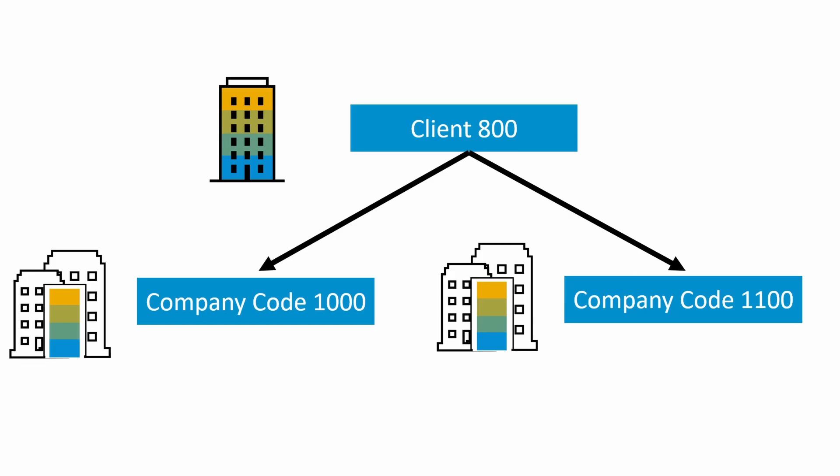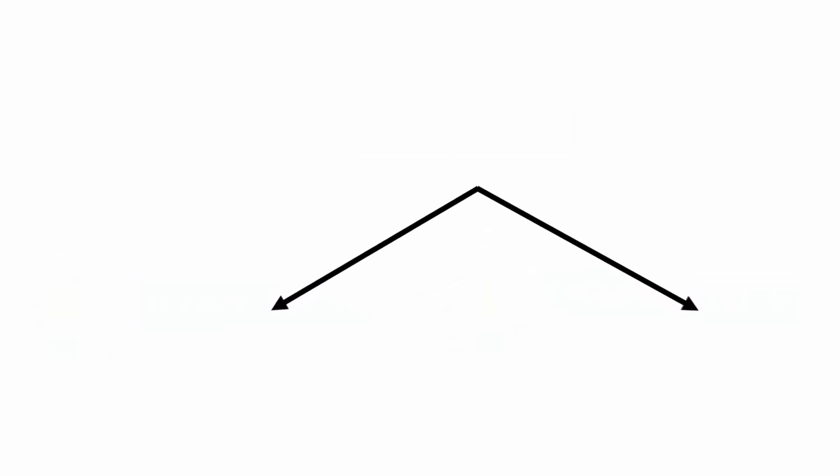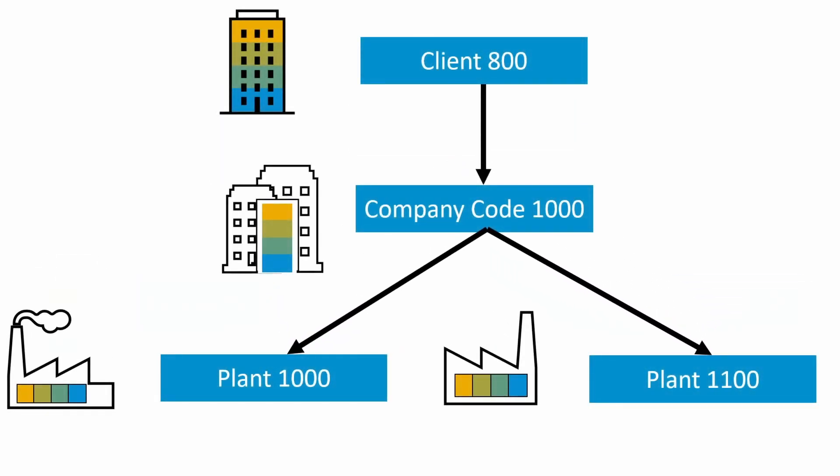Now we can see the assignment of various organization structures in SAP MM. We can create a number of company codes within the client; there is no need to assign company code to client separately. Once you create the plant, you must assign plant to company code. One plant can be assigned to only one company code.